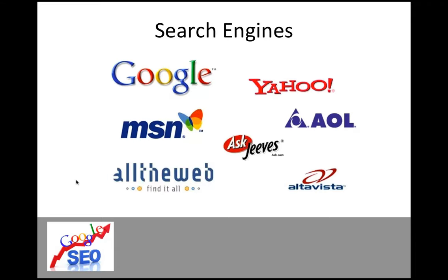Others exist — we've got Bing, Yahoo, AOL, AskJeeves, AltaVista — but most of us use Google. About 80% of people search using Google. A lot of Microsoft computers default to Bing, so that is worth bearing in mind. The SEO that we do is optimised specifically for Google, but the same theory applies to Yahoo, Bing, and all the others.